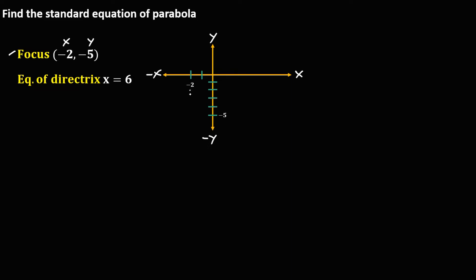This is now the point of the focus. For the equation of the directrix, X equals positive 6, so we draw the vertical line x = 6 — this is the directrix.